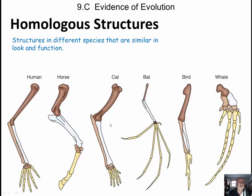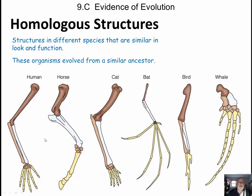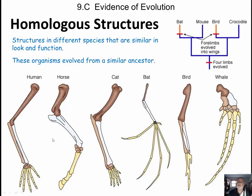Homologous structures are structures of different species that actually have similar purposes as well as look and function. We have the arm of a human, the front leg of a horse, the front leg of a cat, the wing of a bat, the wing of a bird, and the flipper of a whale. If you take a look at the color of the bones, the bone structures are very similar in all of these, even including five digits. The horse actually had multiple toes at some point but found a way that the one toe became larger with the fingernail material on the outside. Even whales have five just like us. These organisms are showing evolution — structures from similar ancestors, moving from one four-limbed creature into everybody you see.